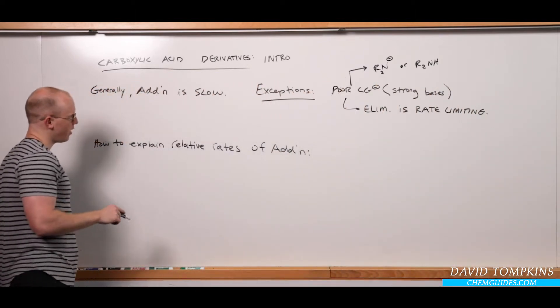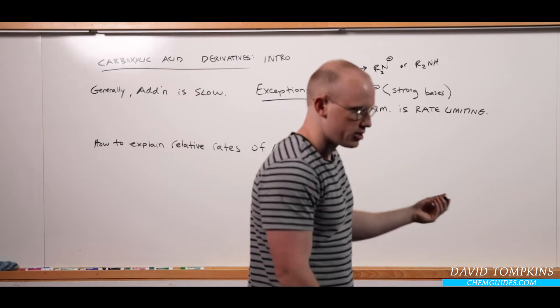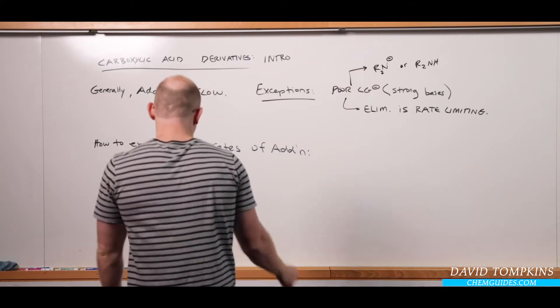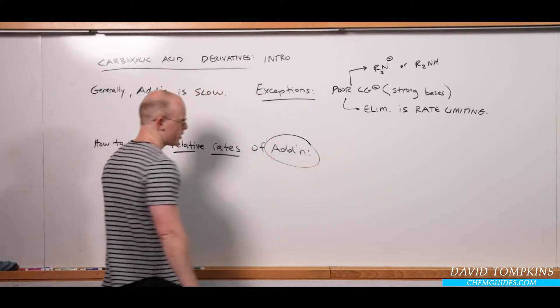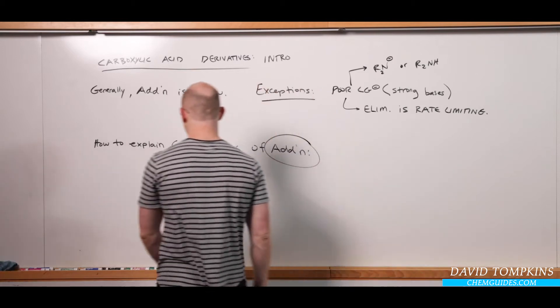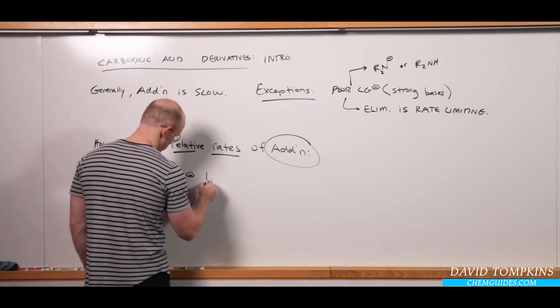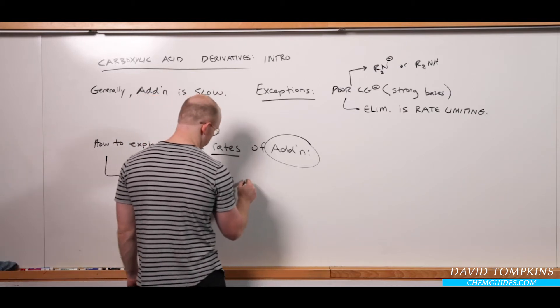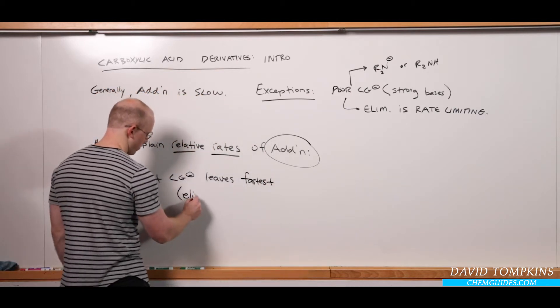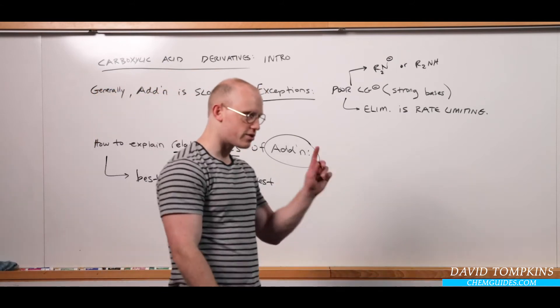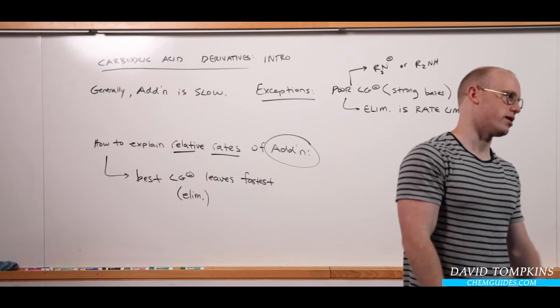Because step one is slow and rate-limiting, we should use something about step one's mechanism or the starting materials for step one to explain the relative rates. The relative rates of nucleophilic acyl substitution depend on the addition step. You'll get to the right answer if you always say the best leaving group is going to be the one that reacts the fastest. And it is true that the weakest base for the best leaving group leaves the fastest, but that's during the elimination step, that's during step two. We should say something about the starting material and the electronics of the carbonyl carbon before addition to determine the relative rates of carboxylic acid derivatives.